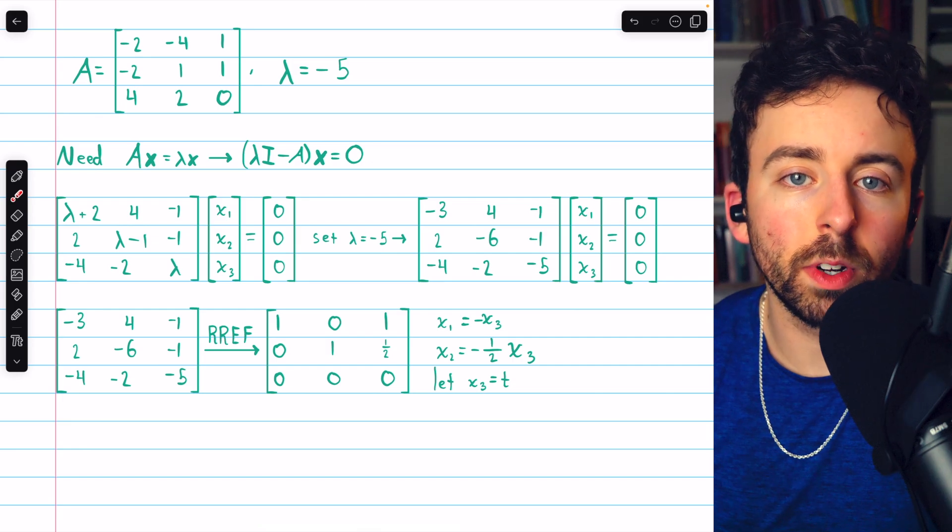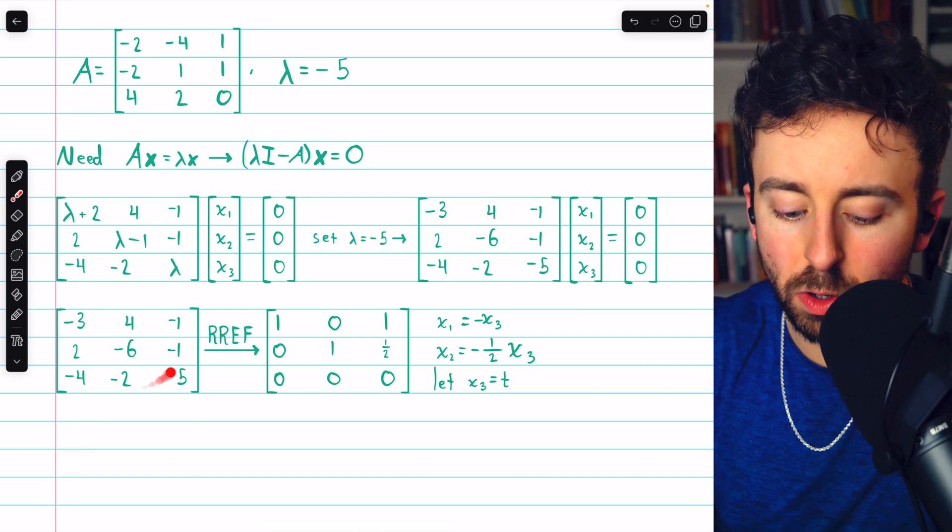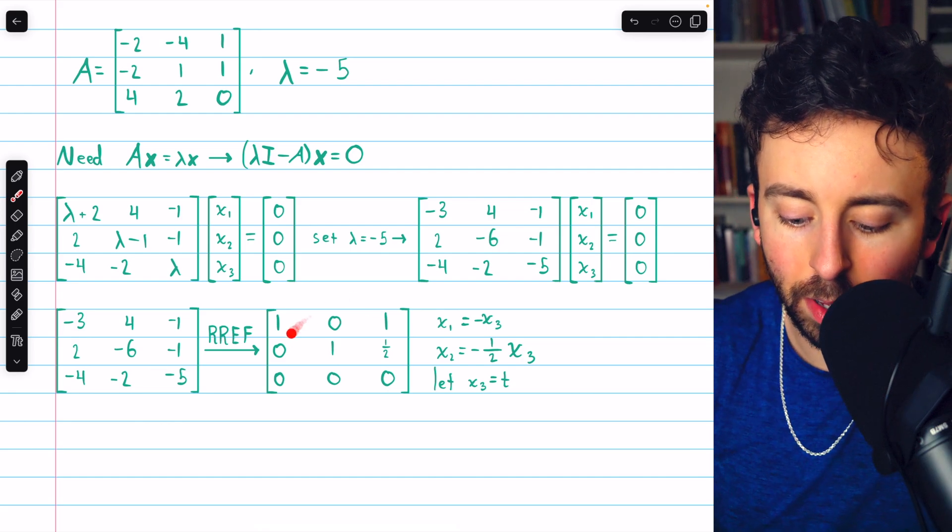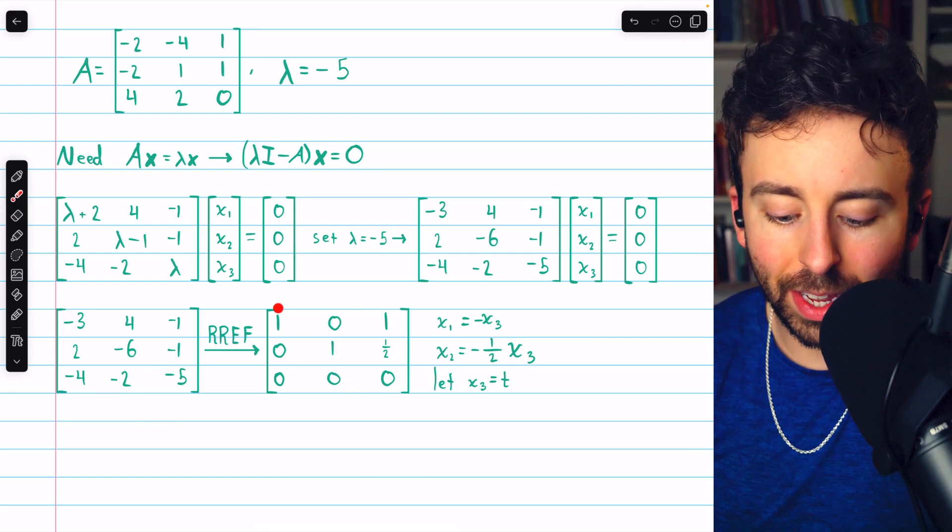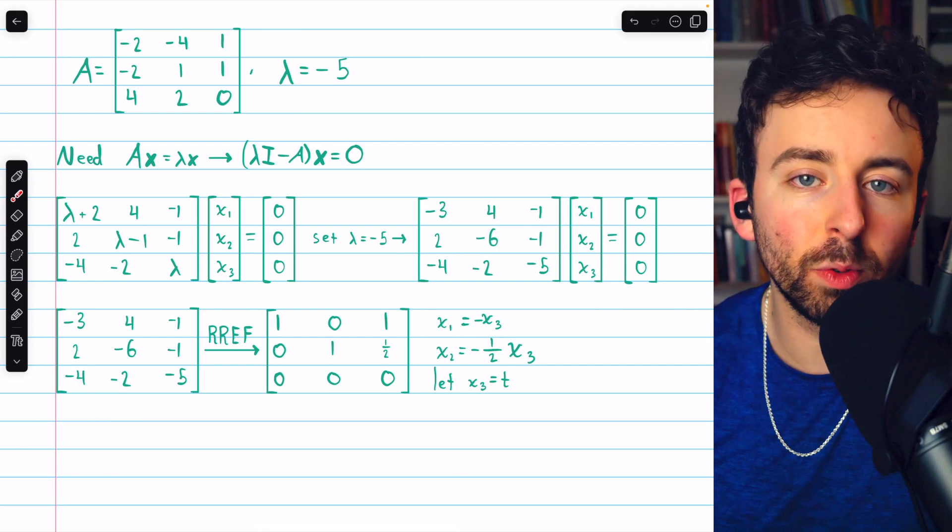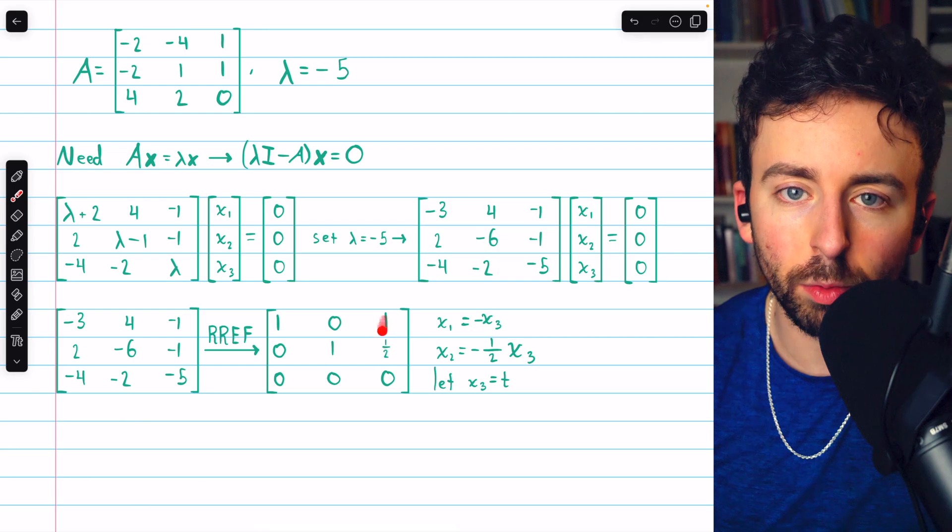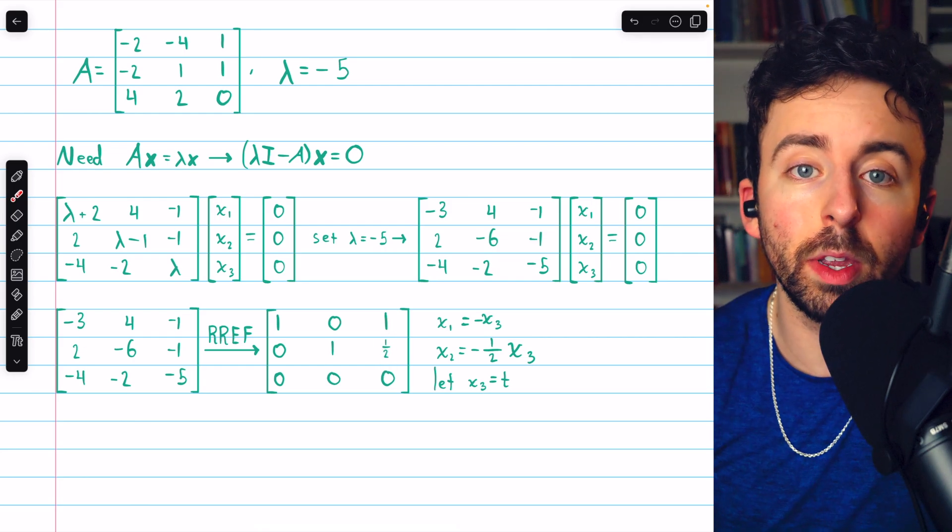Link in the description to my lesson on Gauss-Jordan elimination if you need to review. But you can verify yourself that if we reduce this matrix, we arrive here. And now we have a leading entry in column one, a leading entry in column two. So x1 and x2 are not free. But there is no leading entry in column three. So x3 will be a free variable.